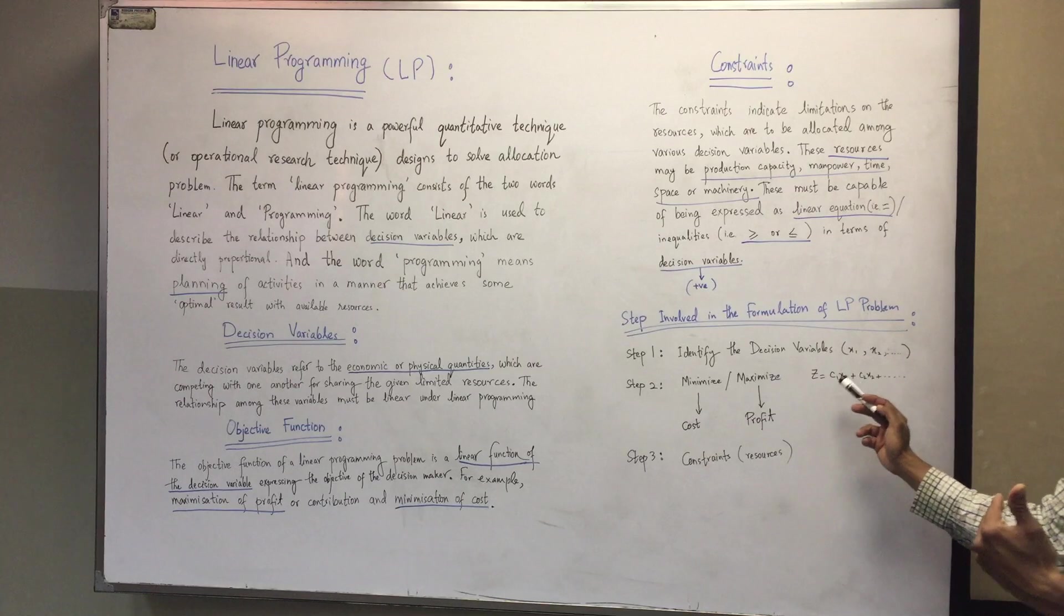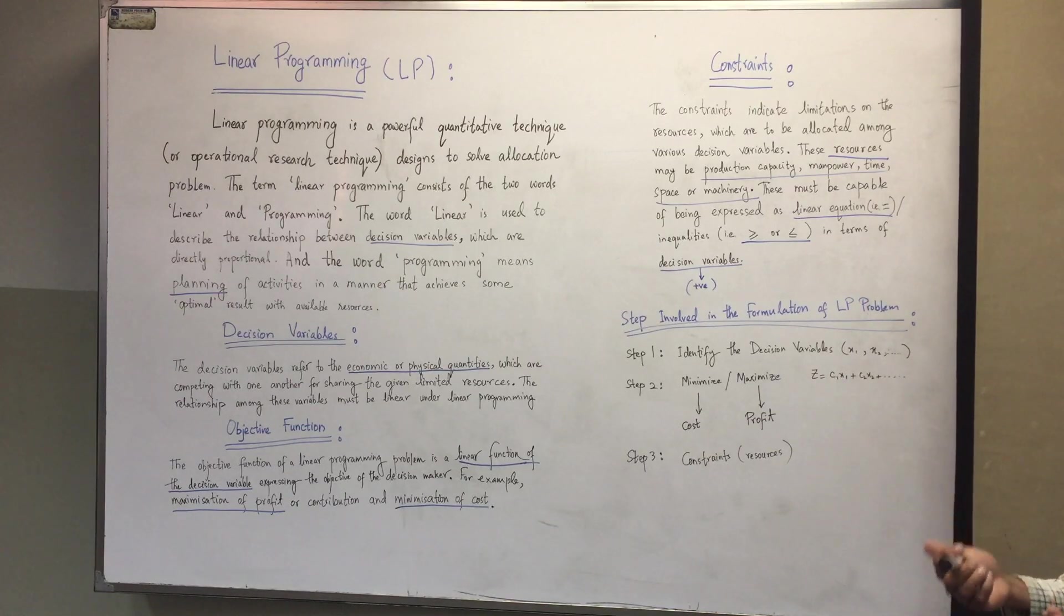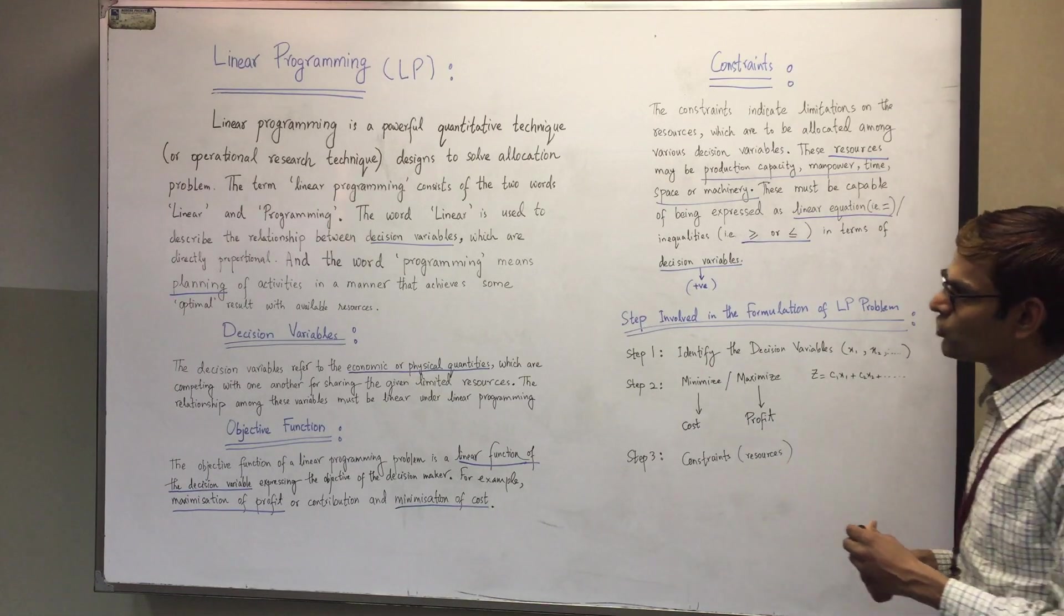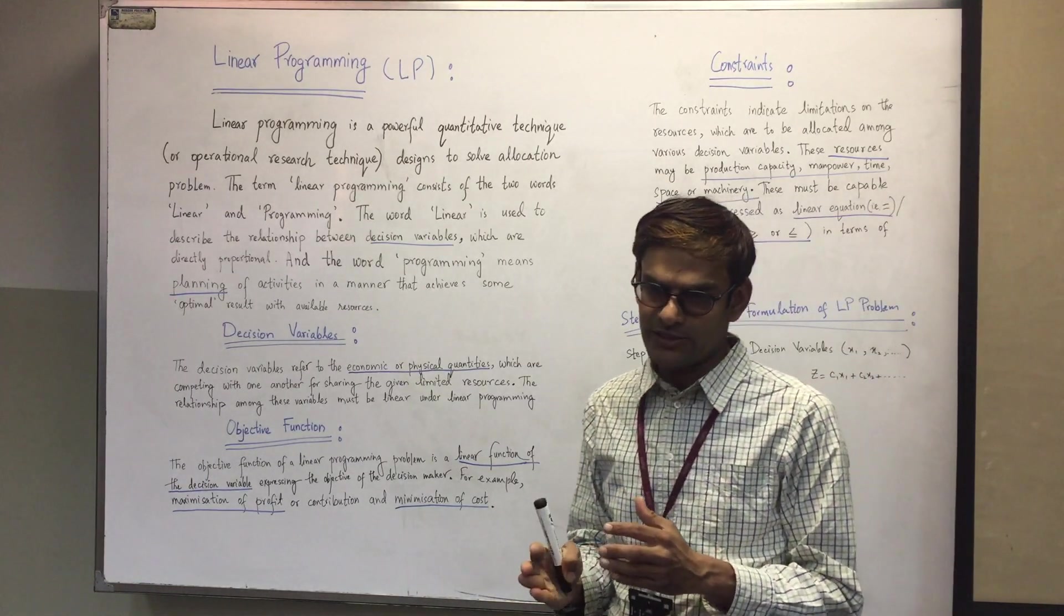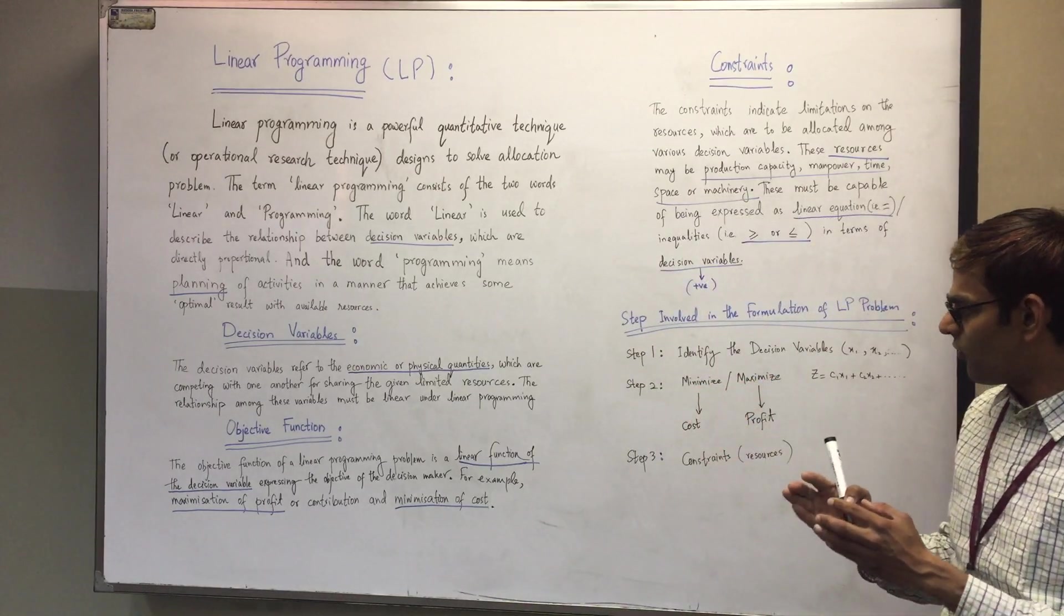We formulate a linear equation, like Z equals c1 times x1 plus c2 times x2, and so on. The number of terms depends on the number of decision variables. It's an optimization technique.